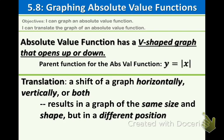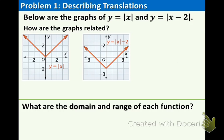Let's try example one. Below are the graphs of Y equals Absolute Value of X and Y equals Absolute Value of X minus 2. How are the graphs related? Well, the graphs have the same shape — we should definitely write that — so same shape and same size.